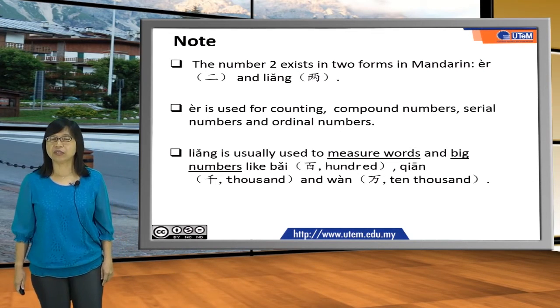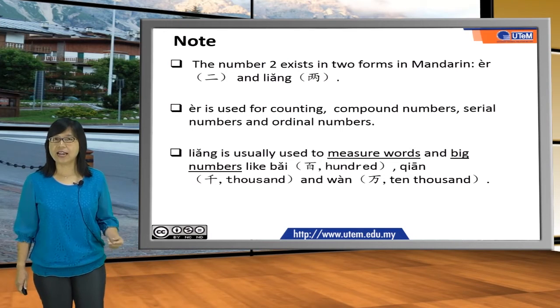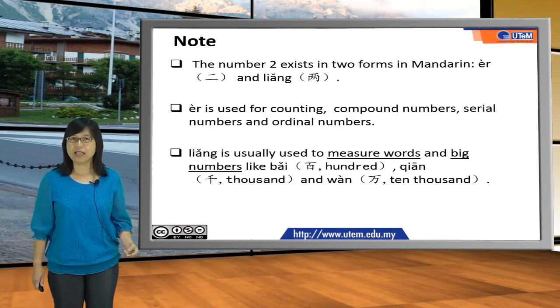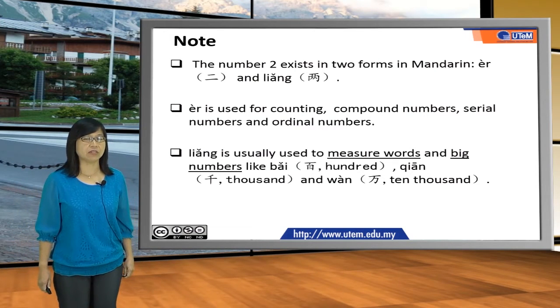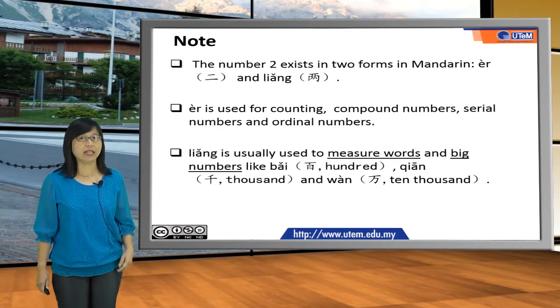One thousand is 一千; we can say two thousand as 两千. And 万 is ten thousand; we can say two ten-thousands as 两万.